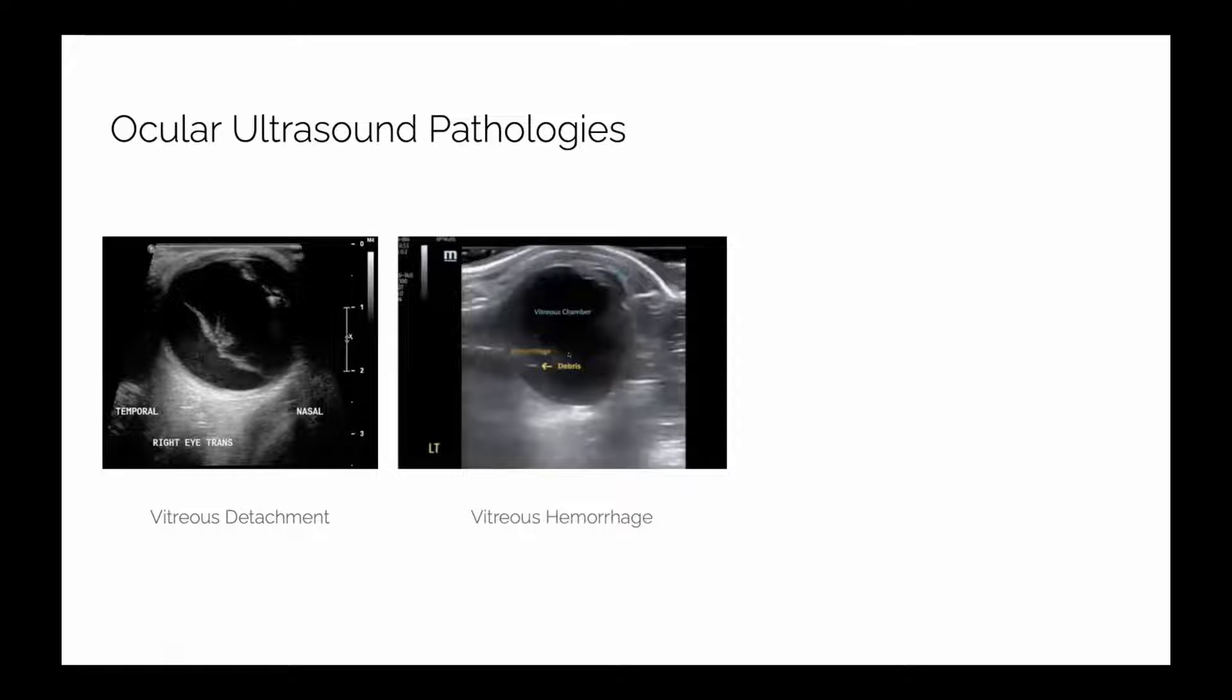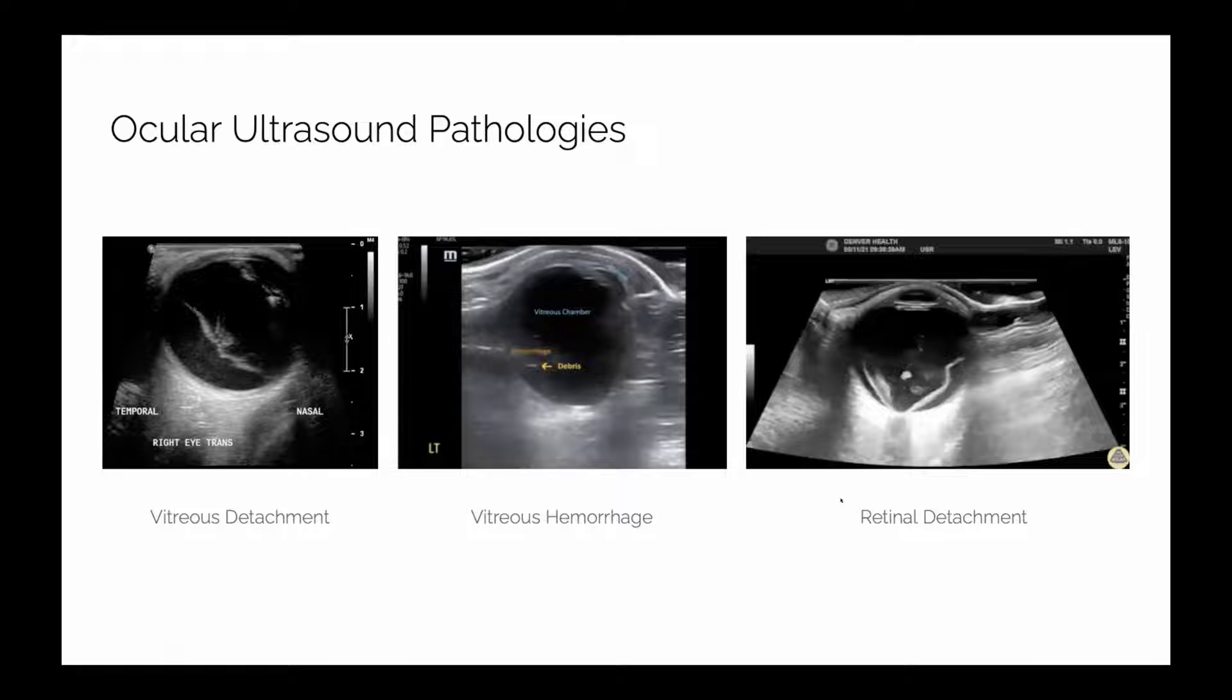Sometimes it can come along with a little bit of blood. Sometimes the blood's just there on its own. You can see a little bit more hypoechoic stuff in the middle of the vitreous, a little bit of blood there. Here's the RD where you can see that it's actually attached to the optic nerve. That's the key difference you want to make between vitreous detachment and retinal detachment. Two very different things with very different prognoses.